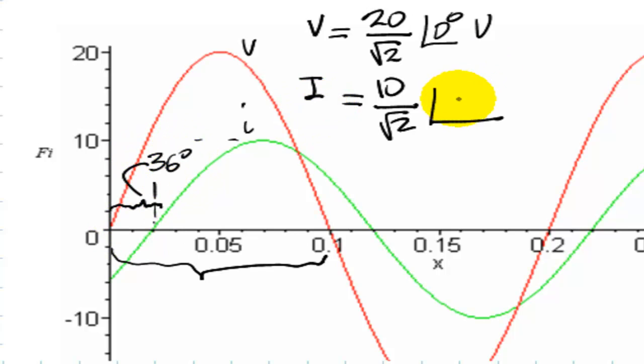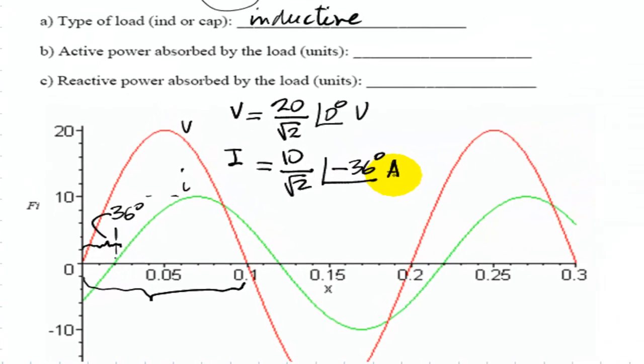The current is lagging. The phase is negative 36 degrees. That is the current. And then what?